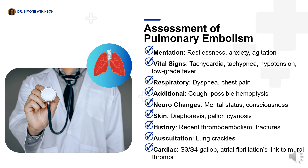During evaluation, carefully consider a range of indicators. Observe for restlessness, anxiety, agitation, and apprehension, which can signify heightened distress. For vital signs, be attentive to tachycardia, tachypnea, hypotension, and the possibility of a low-grade fever. Respiratory symptoms include shortness of breath or dyspnea and chest pain, reflecting compromised lung function. Also be vigilant for cough and potential hemoptysis, as these could indicate pulmonary embolism.